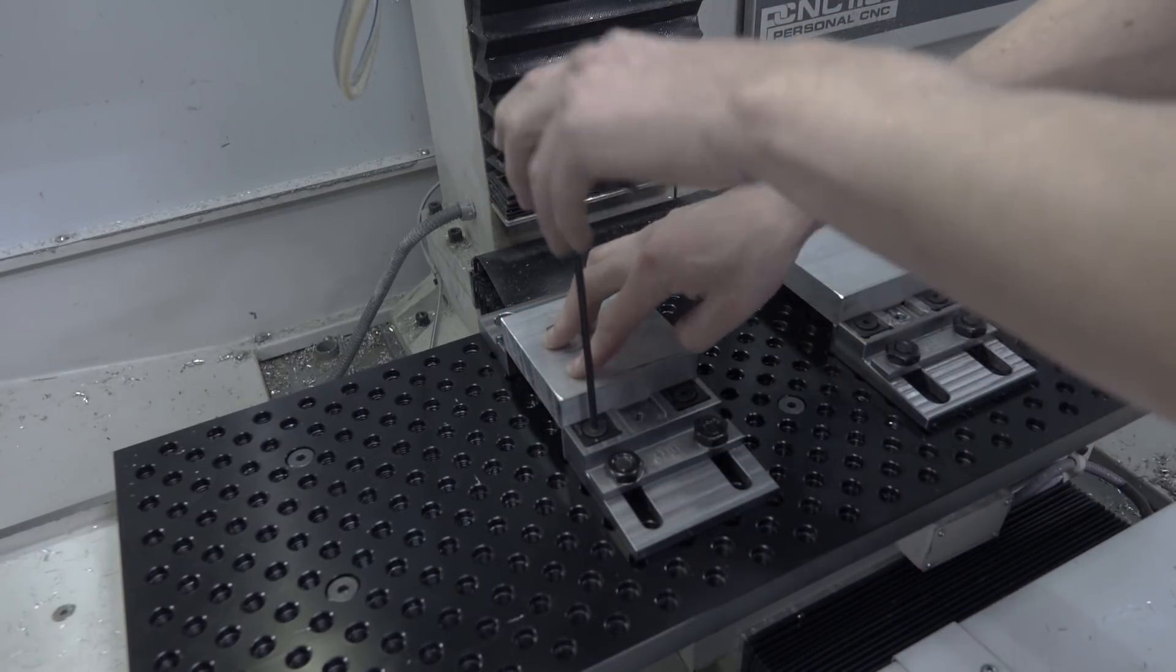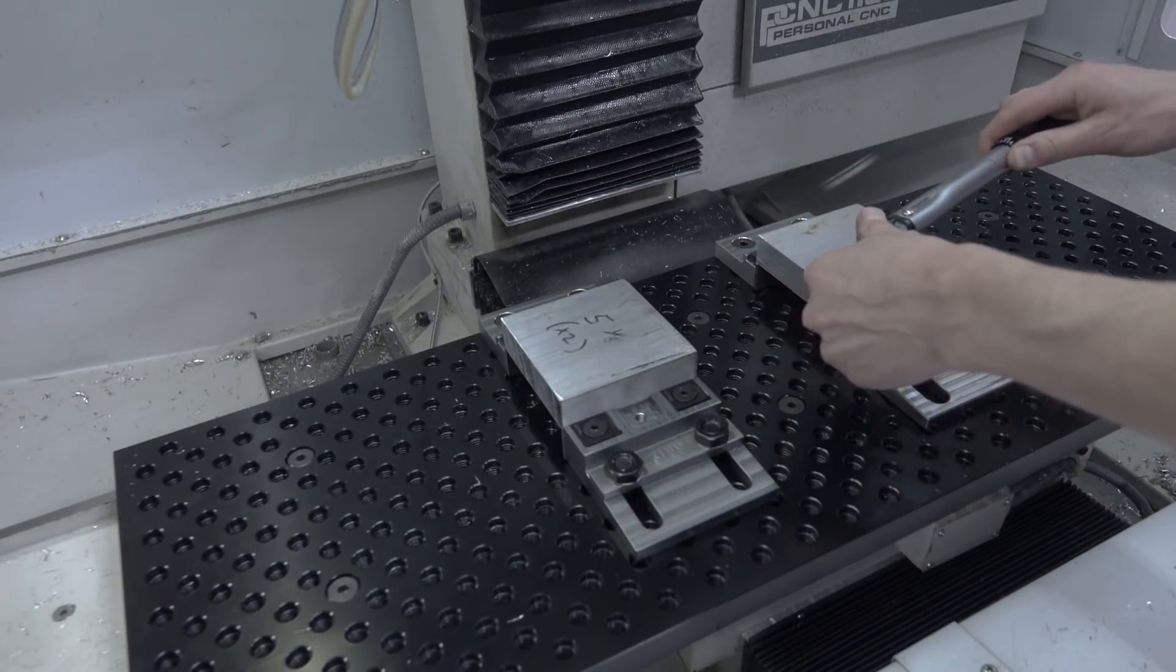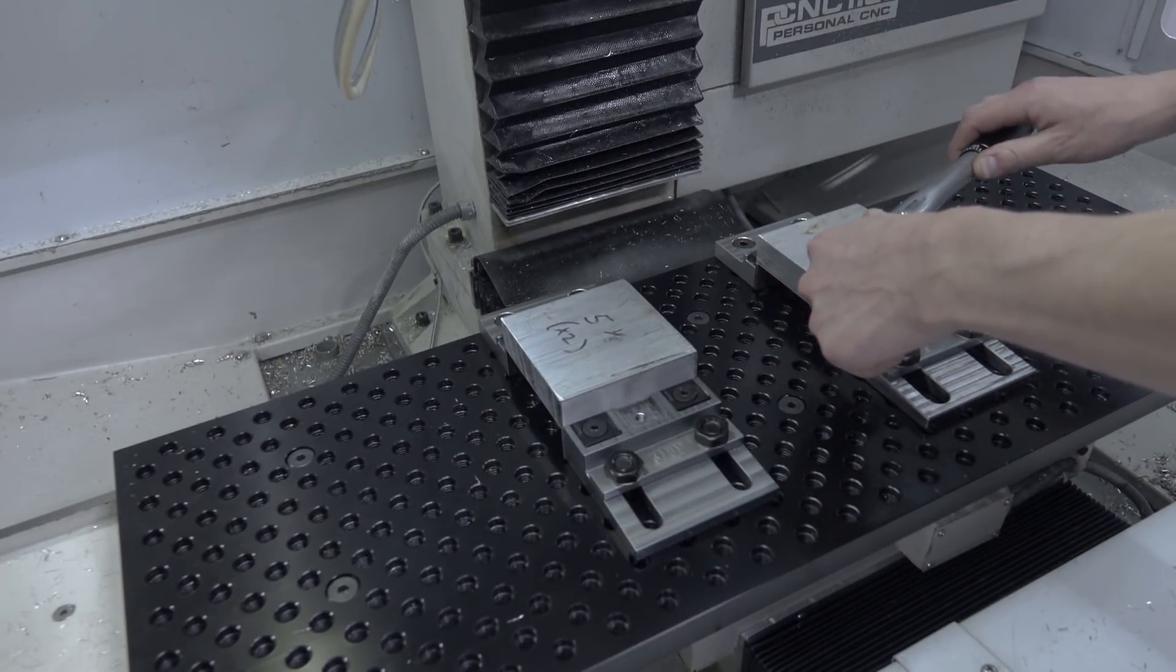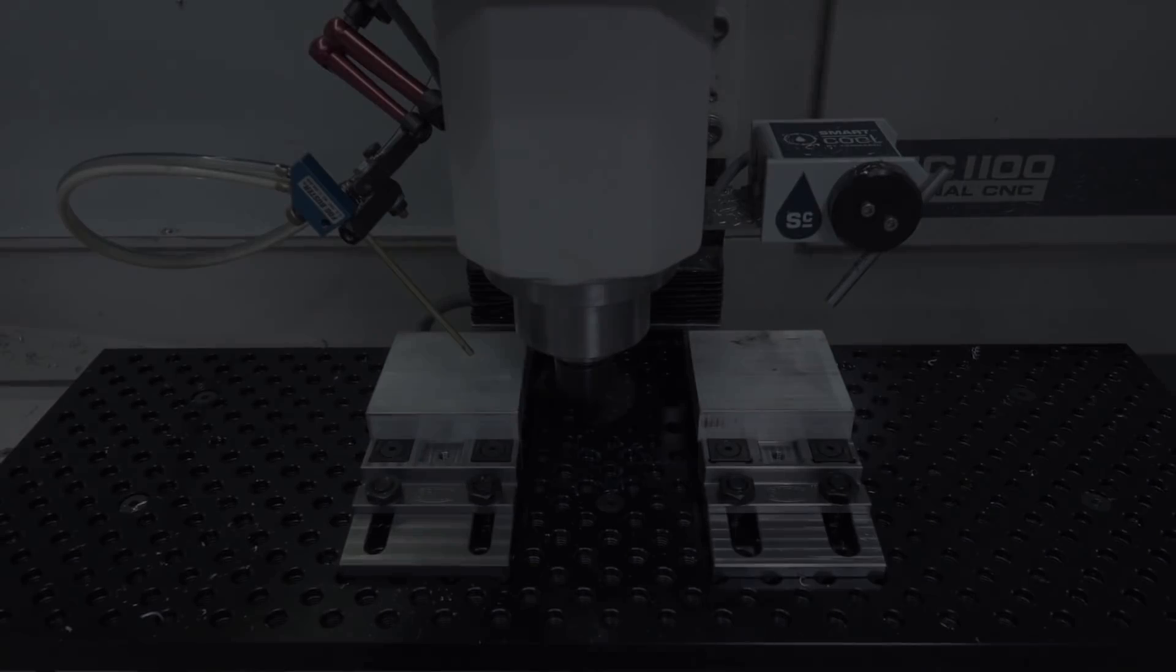And they do two other key things. They hold our part up off the fixture plate with their built-in parallels so we can drill through the part. And they hold on with a really low profile so we're going to be able to walk around the majority of the part in Op 1.